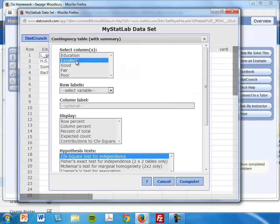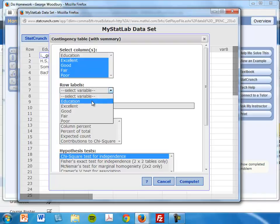The data, numerically, is underneath Excellent, Good, Fair, and Poor. The row labels are under Education, and this is ready to go for now. So I'm going to click Compute.